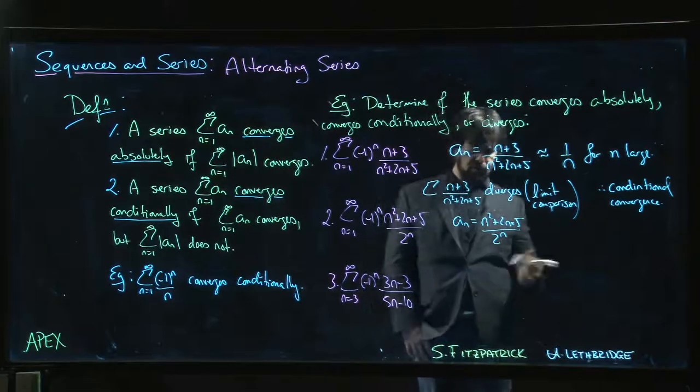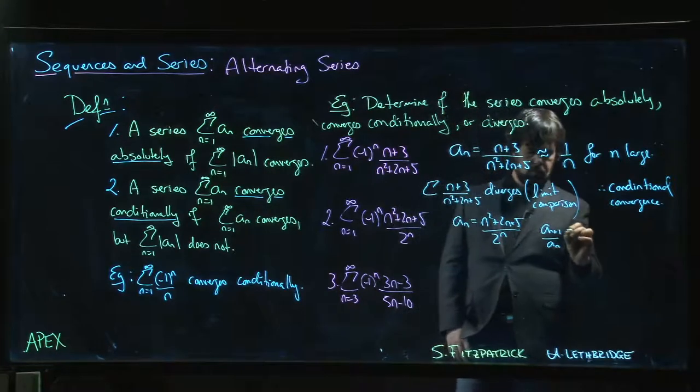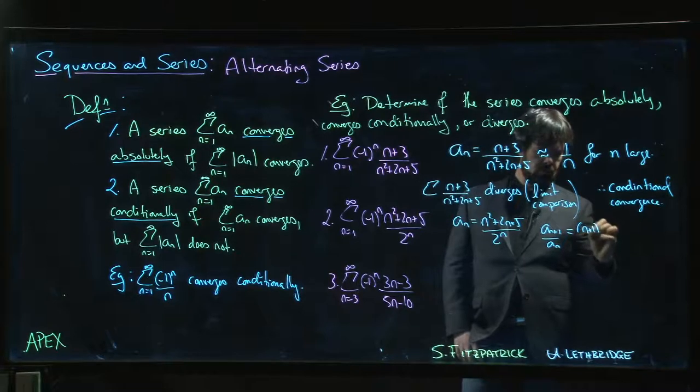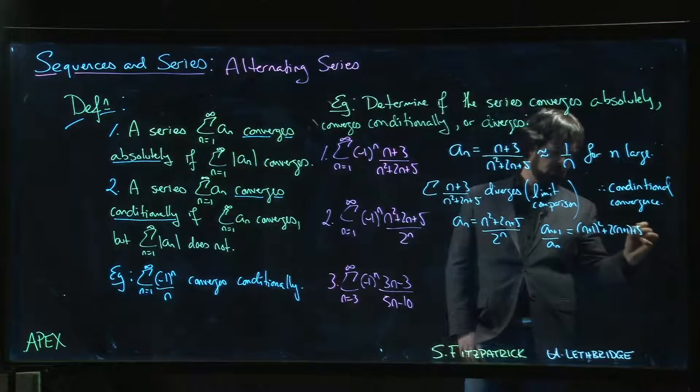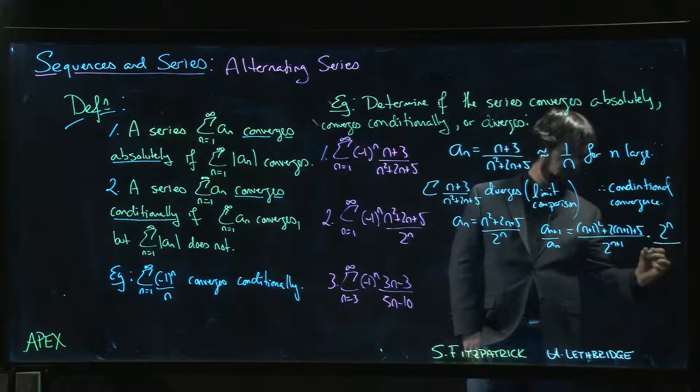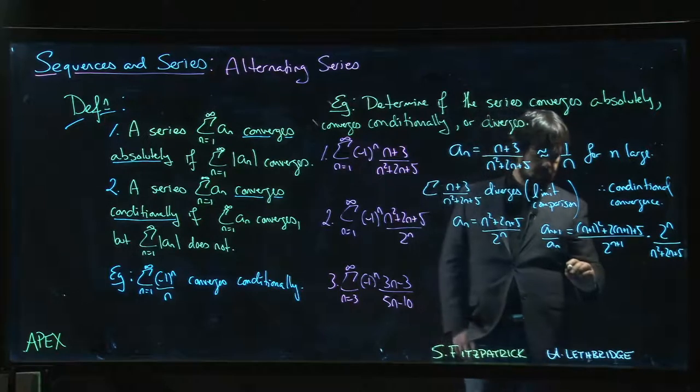So a_(n+1)/a_n, we get [(n+1)²+2(n+1)+5]/2^(n+1) multiplied by 2^n/(n²+2n+5).